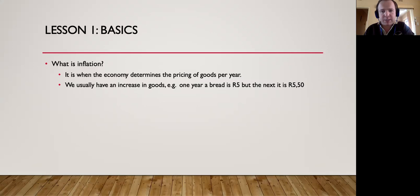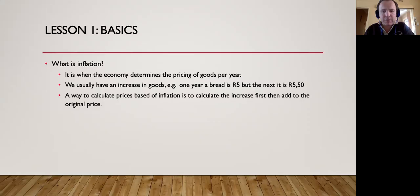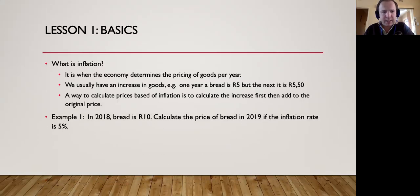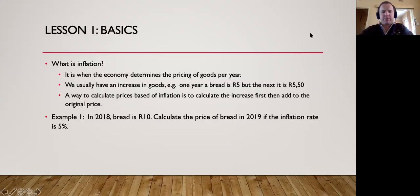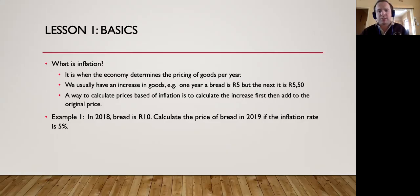How do we work out inflation? Basically, when we want to calculate inflation, we will normally have an inflation rate, and using that inflation rate we work out the increase and then add it to the original price. For example, let's take the price of bread in 2018. Let's say it's 10 rand. In 2019, if the inflation rate is five percent from 2018 to 2019, all we do is work out what five percent of that 10 rand is.